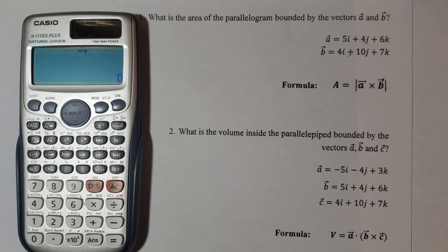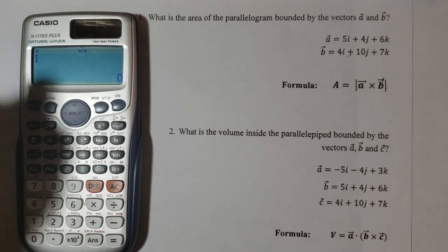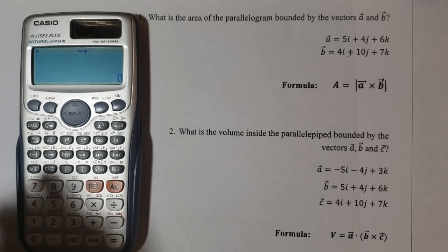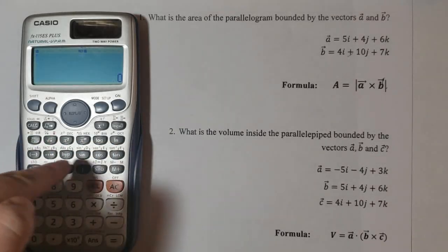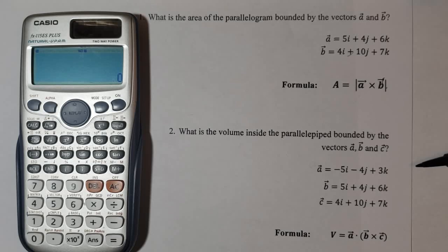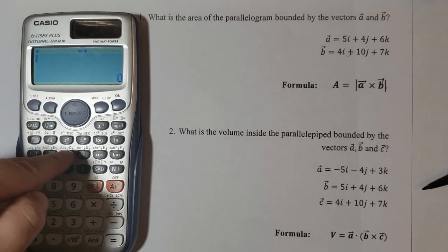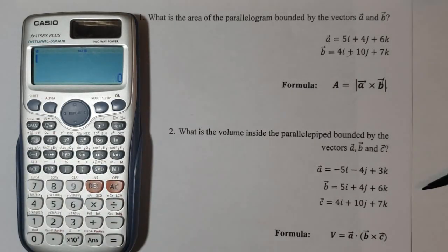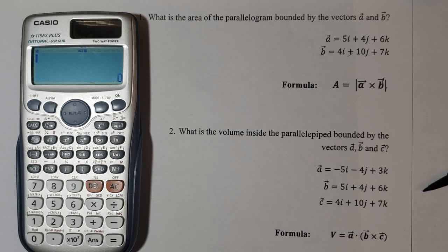Now, instead of doing the formula manually by finding the cross product and then finding the magnitude, we will do it in just one step. Press on the shift key here. This yellow key here is used to access each of the yellow options above each key. Now you see this absolute key here. By pressing the absolute value key, we can find the magnitude of a given vector.